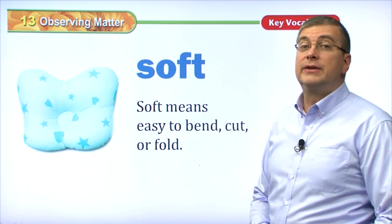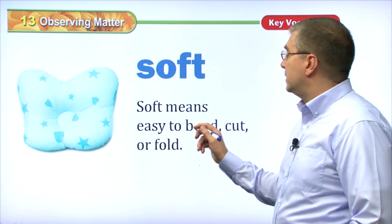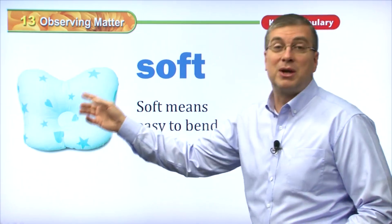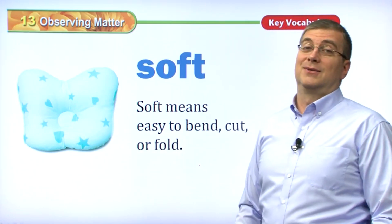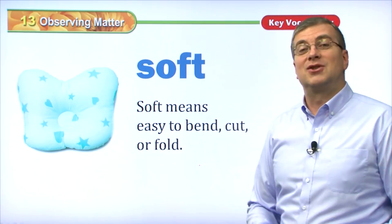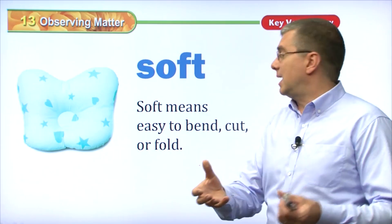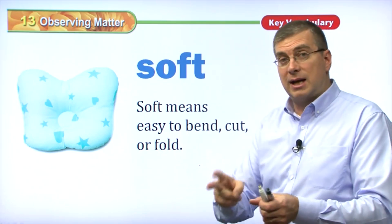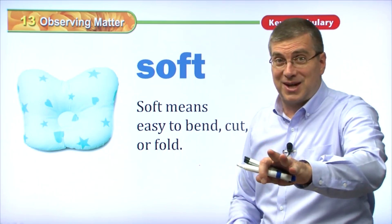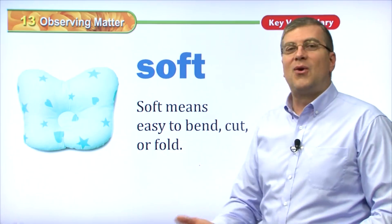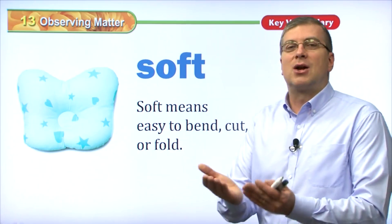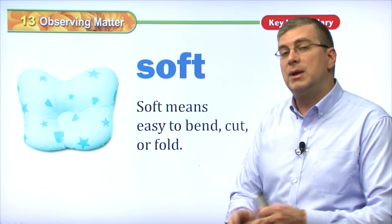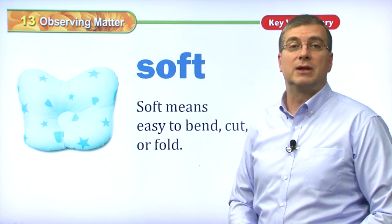The opposite of hard is soft. Soft means easy to bend, cut, or fold. If something is soft like this nice pillow here, you can sit down on it — it's very nice to sit on. Your pillow at home that you put your head on — if you take it, you can bend it, make it curved. You can cut it, but don't cut your pillows! Or you can fold something. When you take cloth or your shirt, you can fold it easily because it's soft — it's a very soft material.